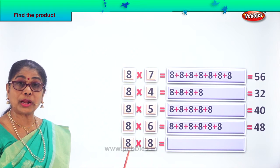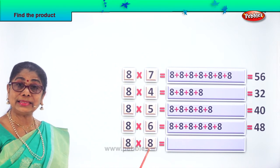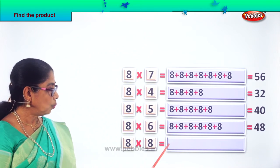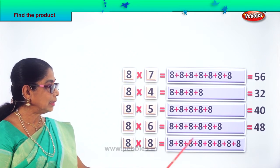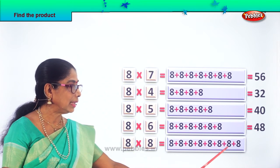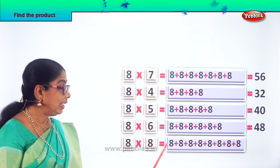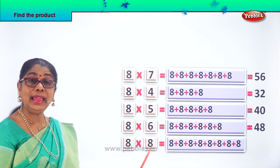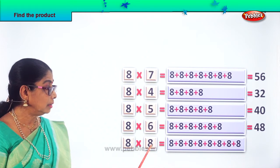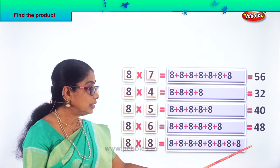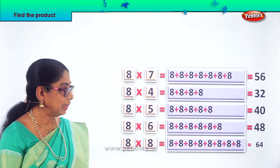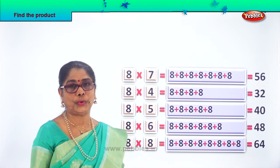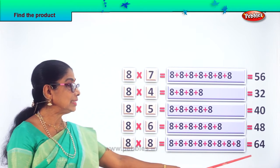And finally, what is the product of 8 into 8? 8 eights — so you write 8 eight times: 8 plus 8 plus 8 plus 8 plus 8 plus 8 plus 8 plus 8 — that's 8 times. What is the product of 8 into 8? 8 eights give you the answer — 64. 8 into 8 is 64.